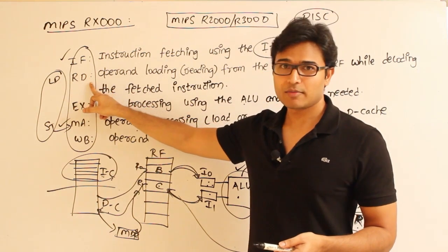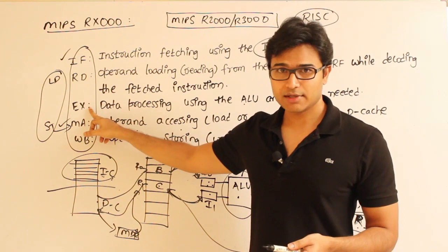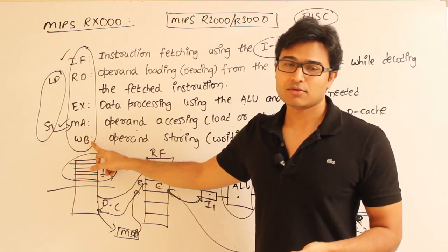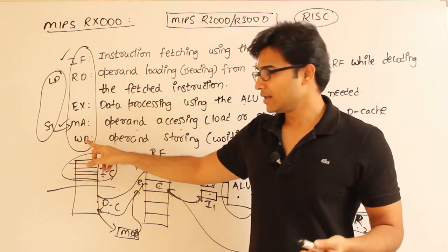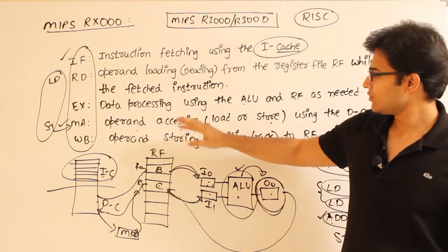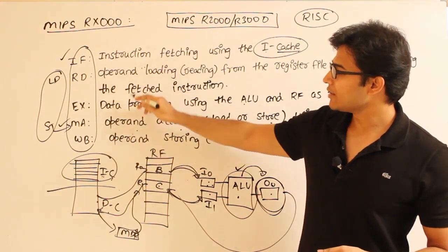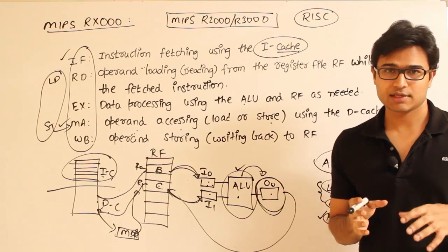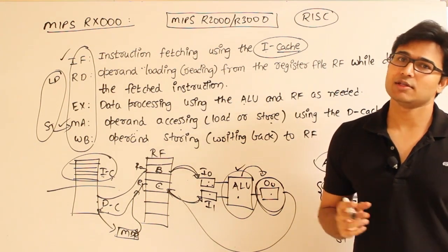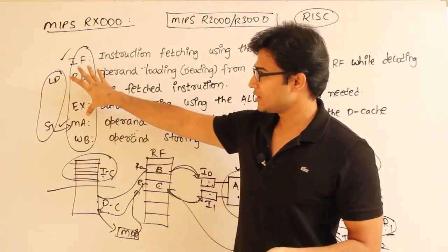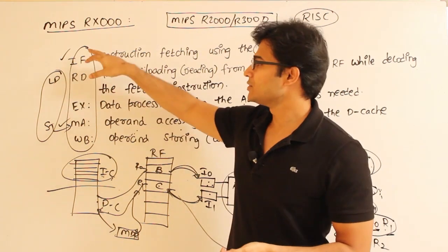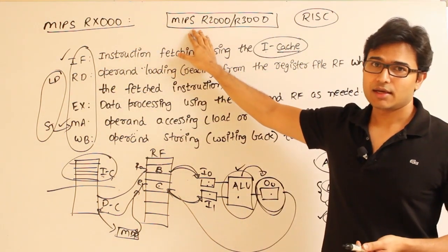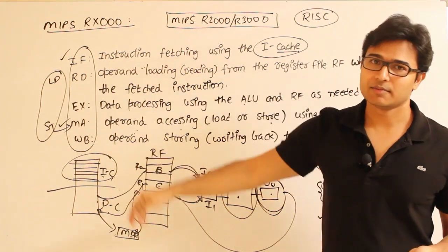To summarize this pipeline: in IF we fetch from I-cache; in RD we load operands from registers (not from memory); in EX we execute; in MA we access memory for load and store instructions; and in WB we write back to the register file — not to memory. Note that RD and WB both access the register file simultaneously, but there is a hardware provision to allow two phases to access the register file at the same time without conflict. This pipeline has appeared in many GATE exam questions.